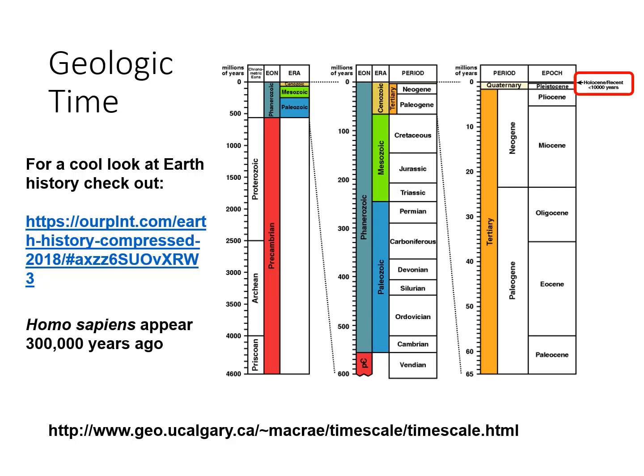Earth scientists have divided Earth history based on major events recorded in the fossil record. The leftmost panel shows the two main divisions of the entire 4.6 billion year history: the Precambrian and the Phanerozoic. These two eras are differentiated by the appearance of multicellular life at the start of the Phanerozoic, about 550 million years ago. The middle panel shows the divisions of the Phanerozoic. The most recent period is the Tertiary, which began about 65 million years ago when the dinosaurs disappeared.